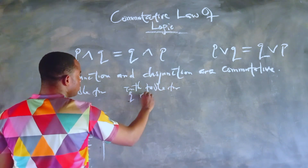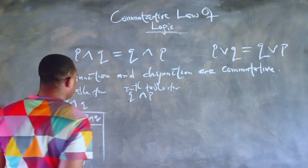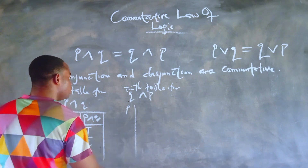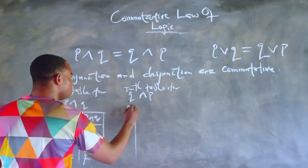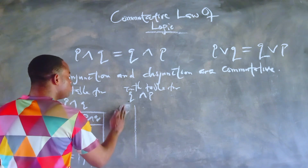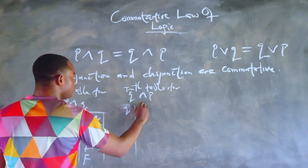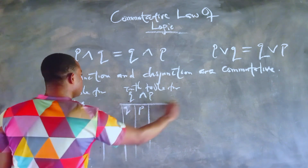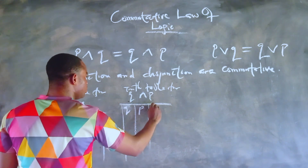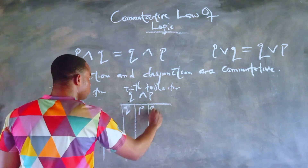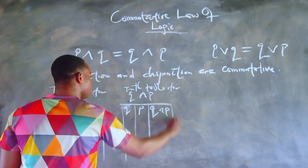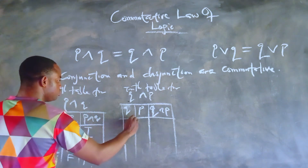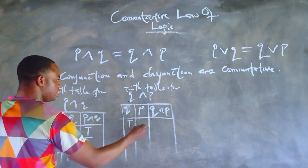Now let us see the truth table for Q and P — this time, Q first. We are going to compare the truth table and see if they are the same. So we need Q and P on the table. This time it's Q and P; the other time it was P and Q.